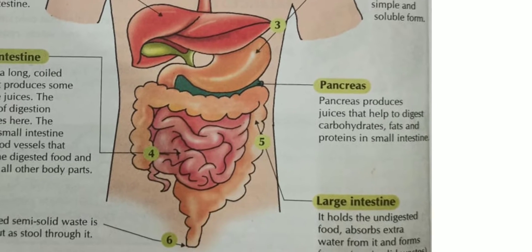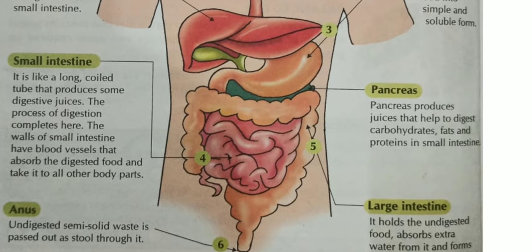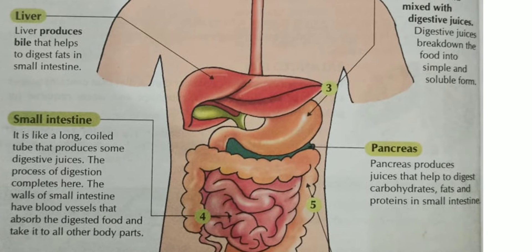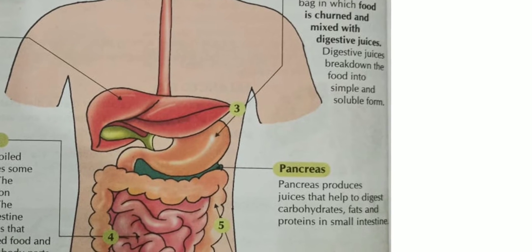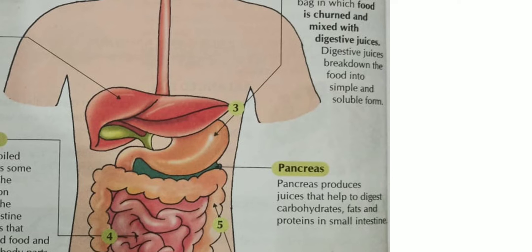The fourth part is the small intestine. On the way from the stomach to the small intestine, food mixes with two juices. One juice is from the liver — it is called bile, a very potent juice which helps in the digestion of fats. The other juice is pancreatic juice, released from the pancreas, which also helps in digestion — breaking down carbohydrates, fats, and proteins.